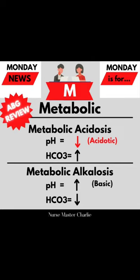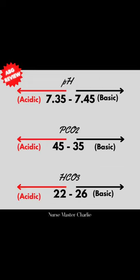Arterial blood gas, or ABG, measures blood acidity and alkalinity. The normal pH range is 7.35 to 7.45. In an ABG, pH measures the power of hydrogen — that's a little 'p' and a big 'H' — and it's called pH.